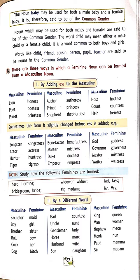Uncle and aunt, gentleman and lady, horse and mare, husband and wife, son and daughter, king and queen, man and woman, nephew and niece, monk and nun, papa and mama, sir and madam — these are all pairs of masculine and feminine nouns formed by completely different words.